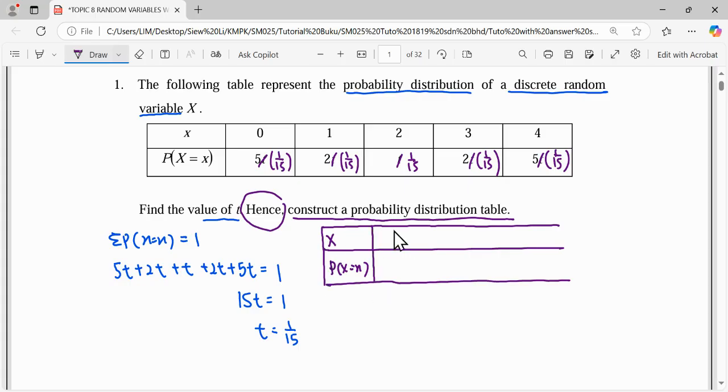So we have 0, 1, 2, 3 and lastly the table for 4. So random variable is 0, 1, 2, 3, 4 and its corresponding probability, we simplify what 5 over 15 is 1 over 3. Then 2 over 15, this is 1 over 15, this is 2 over 15. Again, simplify for this 5 over 15, which is 1 over 3. So this is the probability distribution table. So thank you for watching.